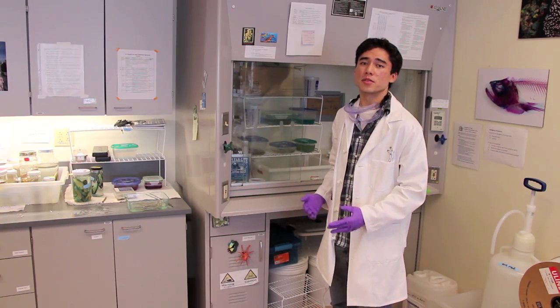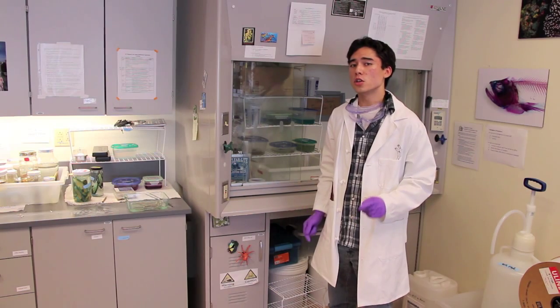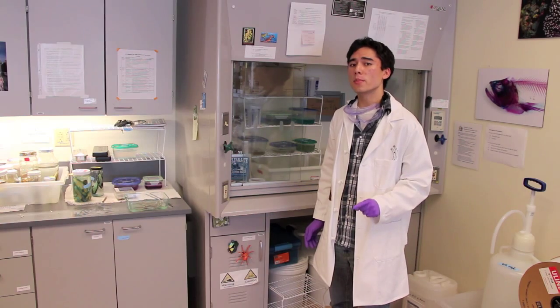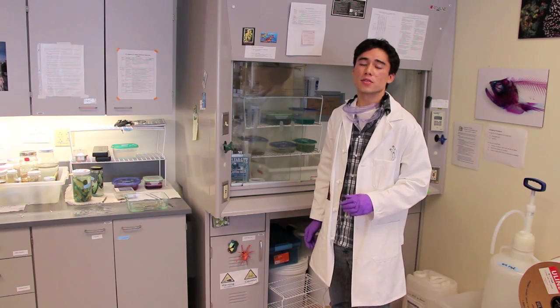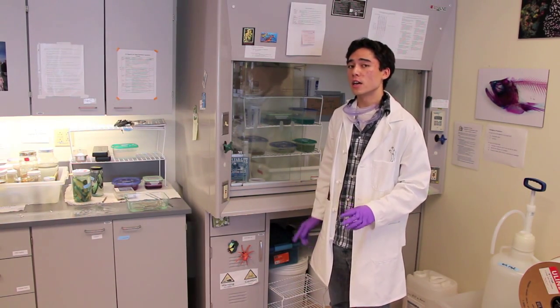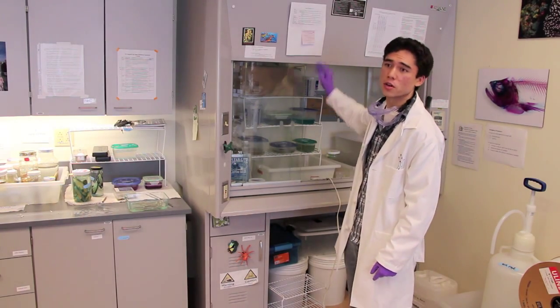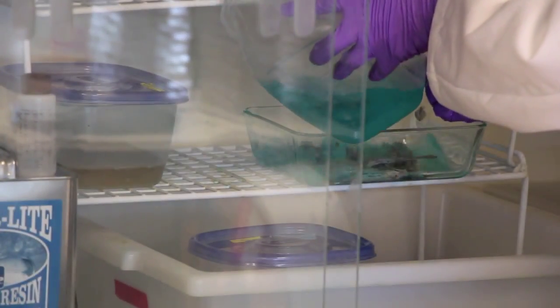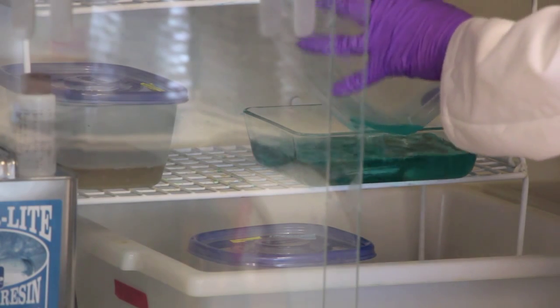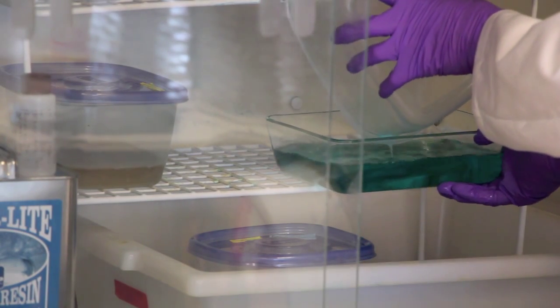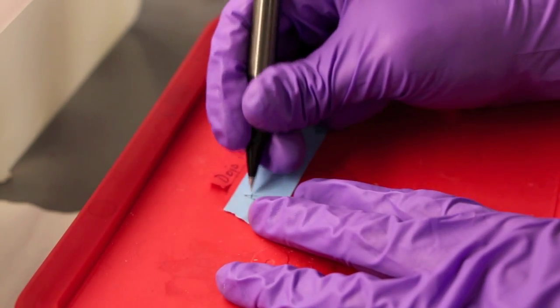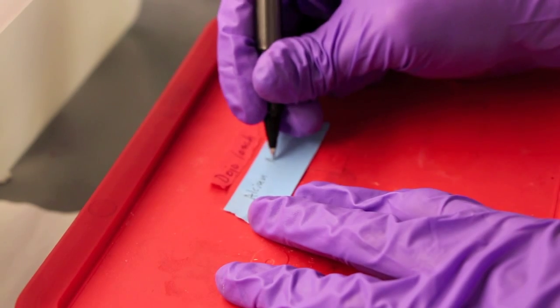Now that the specimens have been skinned, we're going to begin the process of staining the cartilage. To do this, the skin specimen will be placed inside a bath composed of four parts ETOH, one part glacial acetic acid, and a small amount of alcine blue dye. Now this stuff can smell pretty bad, so we're going to use this fume hood here to get rid of all that bad smell. And remember to label everything with the correct time and date that it was added to that chemical.